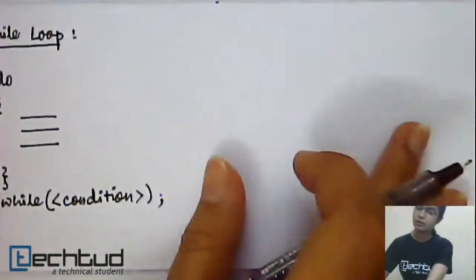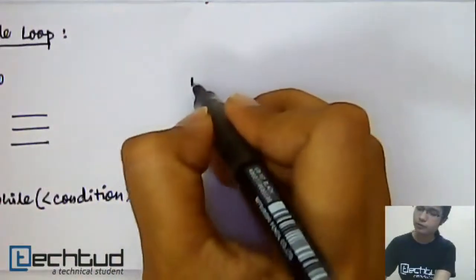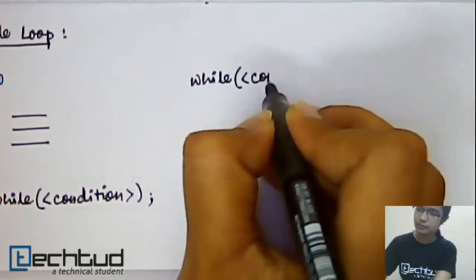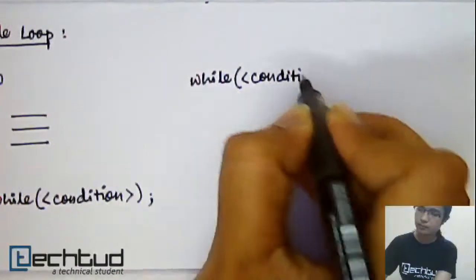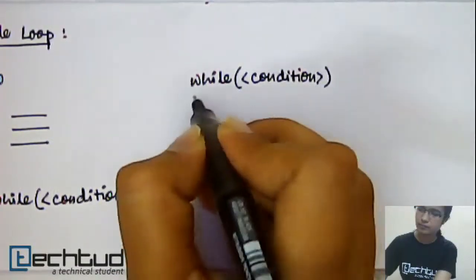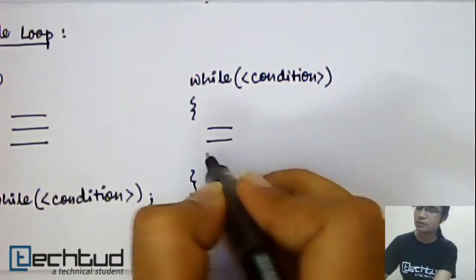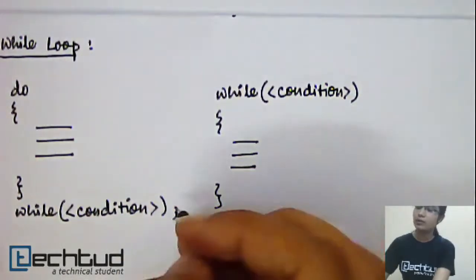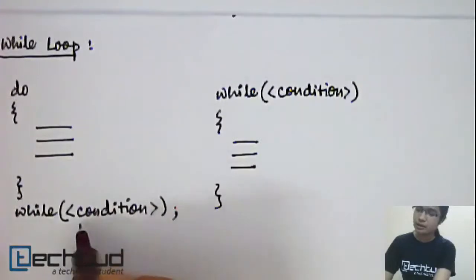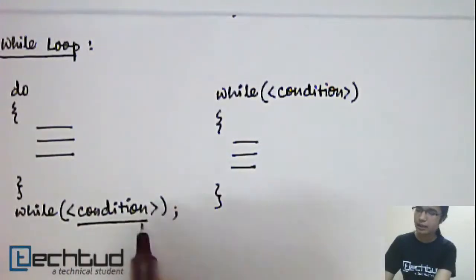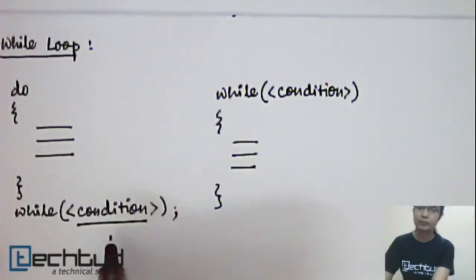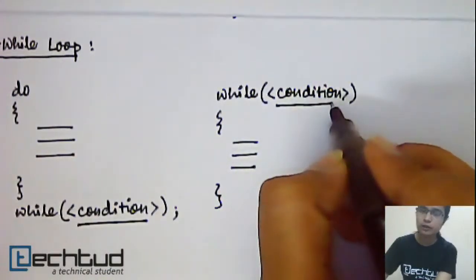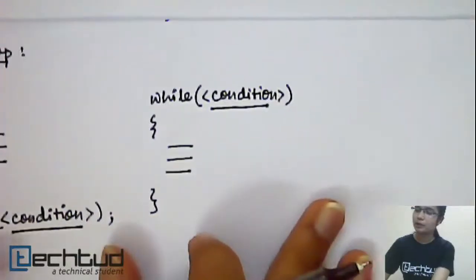As you can remember from our previous video, the syntax of while is like this. By comparing it side by side, you can understand that the difference of do-while from while is that the condition is being checked at the last of the loop, at the end of the loop, whereas here the condition is checked at the start of the loop. So what will happen?